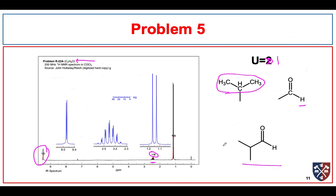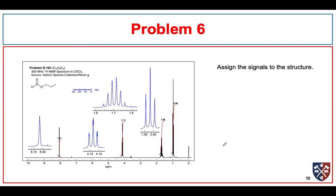Our last problem is an assign-the-peaks problem — assign the signals to the structure. I'll take a look at where we expect the aldehyde to come: somewhere approaching 9 ppm. We don't have anything at 9, but we do have something at 8 ppm. This functional group has an adjacent oxygen, so it comes at a slightly different position. I'm going to assign that proton to this signal — notice it integrates for 1.